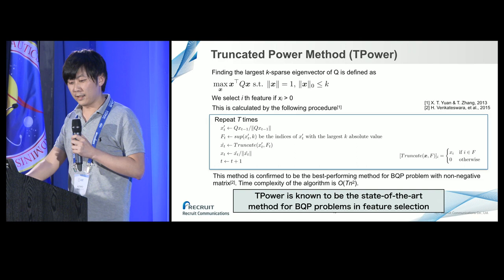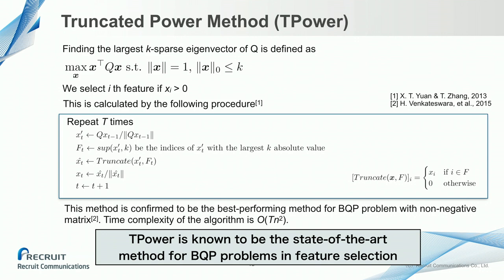The truncate power method, or T-power, solves the MIFS optimization problem by finding the largest K-sparse eigenvector of Q as defined by the equations here. We select feature i if X_i is positive. In T-power, we multiply Q by vector X_t and truncate X_t repeatedly until the vector X converges. This algorithm needs an initial value, so we use the solution from the linear method as the initial value. T-power is known to be the state-of-the-art method for BQP problems in the machine learning community.